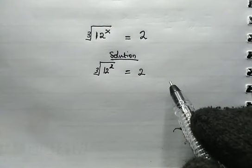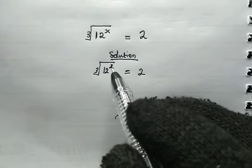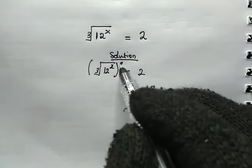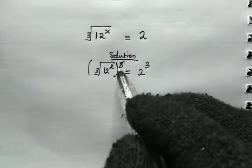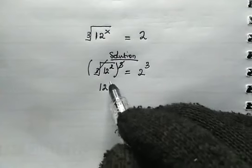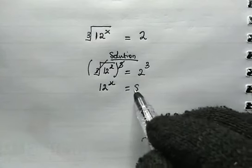From here we're going to cube both sides of this equation to get rid of the cube root sign. We cube this and from the right we cube as well. The cube and the cube root will cancel out. We are left with 12 to the power of x. This is equal to 2 cubed, which is 8.